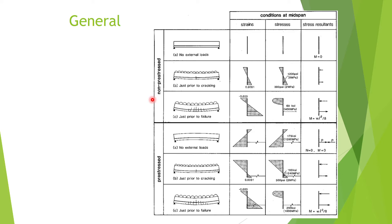Let us compare a non-pre-stressed beam with a pre-stressed beam. For a non-pre-stressed, or normal reinforced concrete beam, the steel is not in tension when there is no external load. Because there is no pre-stressing force, the steel does not exert any internal stresses in the concrete. So the strain is zero, stresses are also zero, and the moment is also zero when there are no external loads.